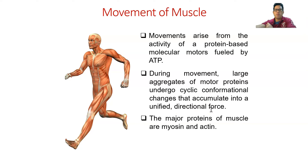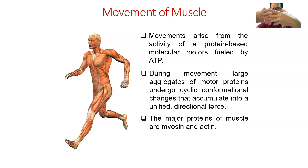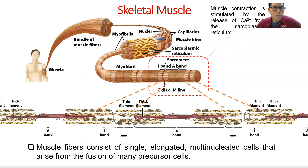This means the whole muscle contracts together in the same way — one part does not contract more than another. The whole muscle fiber contracts and relaxes together. The major proteins are myosin and actin. Let's look more closely at muscle: it is made of a bundle of muscle fibers.